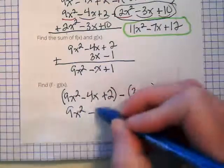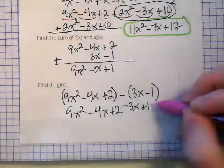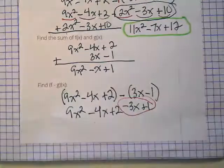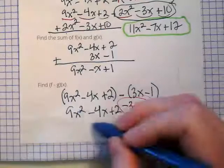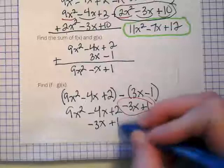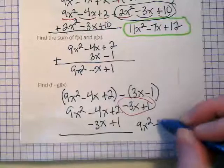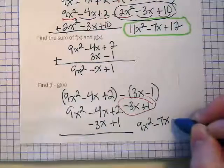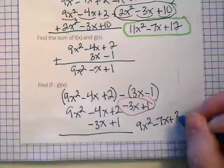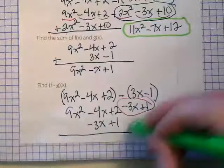And 9x squared minus 4x plus 2. I'm going to take the terms from what was our g of x. I'm going to line them up underneath their like terms here. And we're going to combine them. And we get 9x squared minus 7x plus 3. And there's my solution.